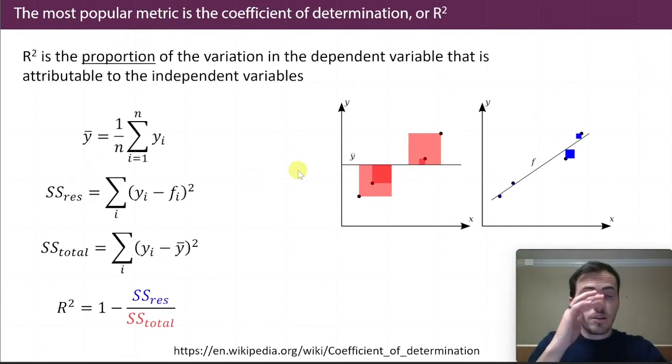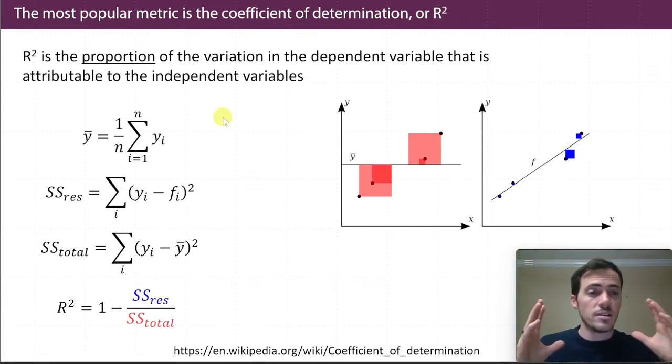So the way they calculate this is by first calculating the average, right? So if you have a bunch of data points, we'll call those, you have Y data. So Y sub I is each individual data point in your data set Y.